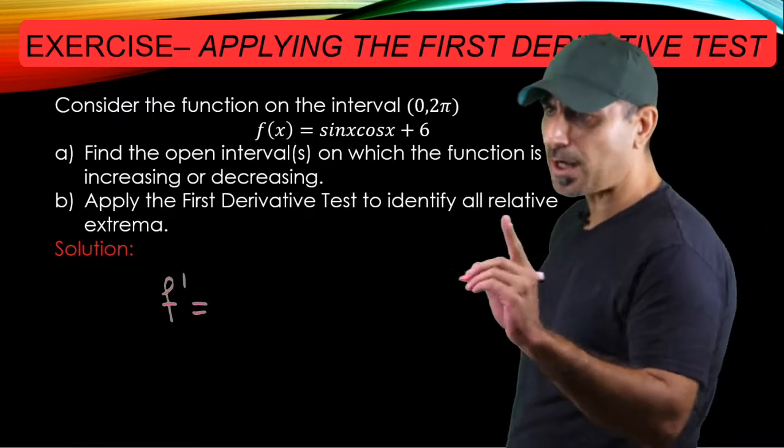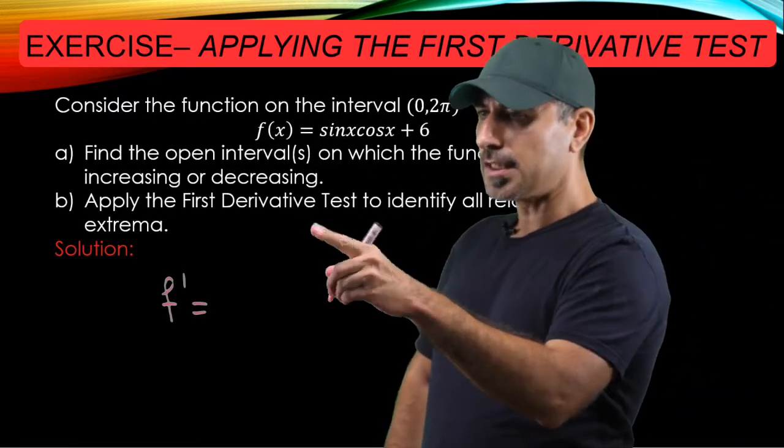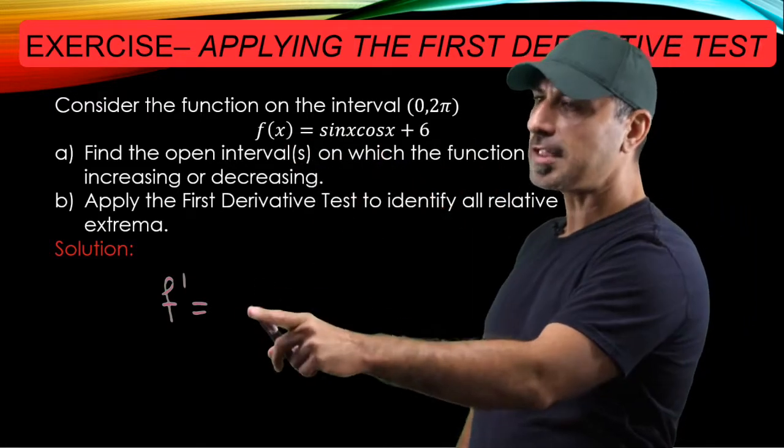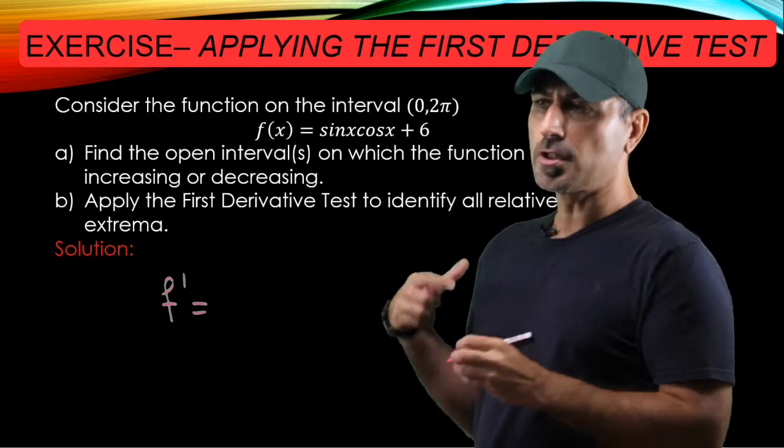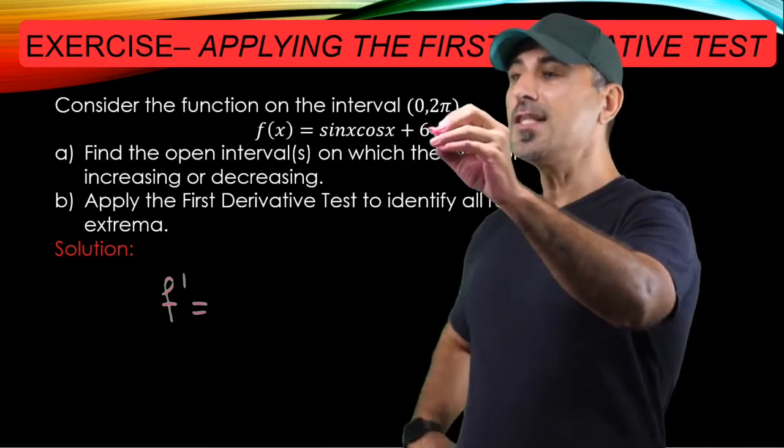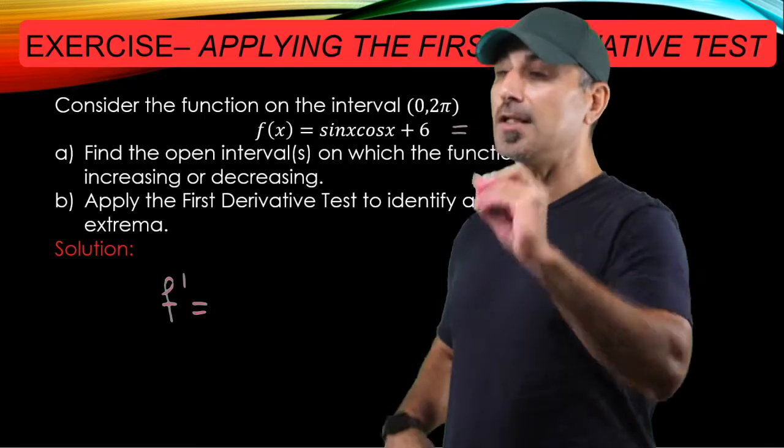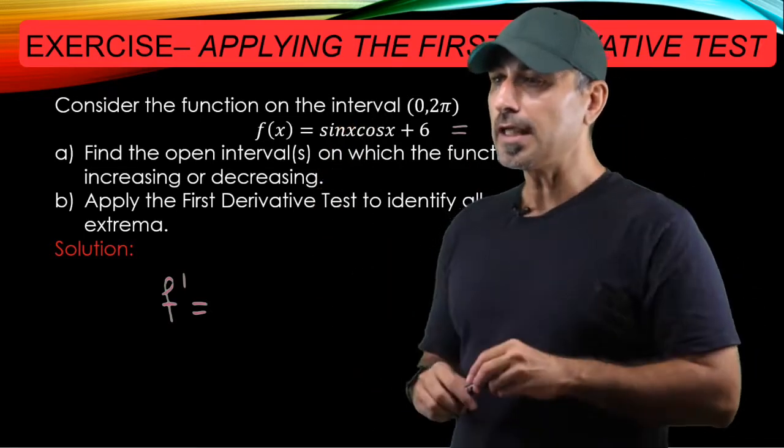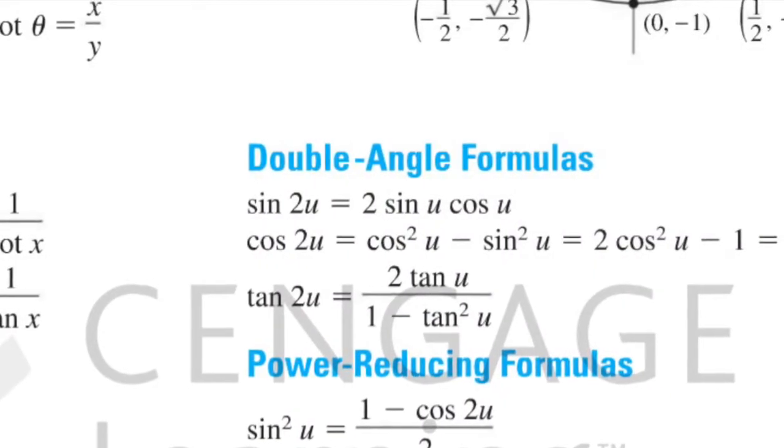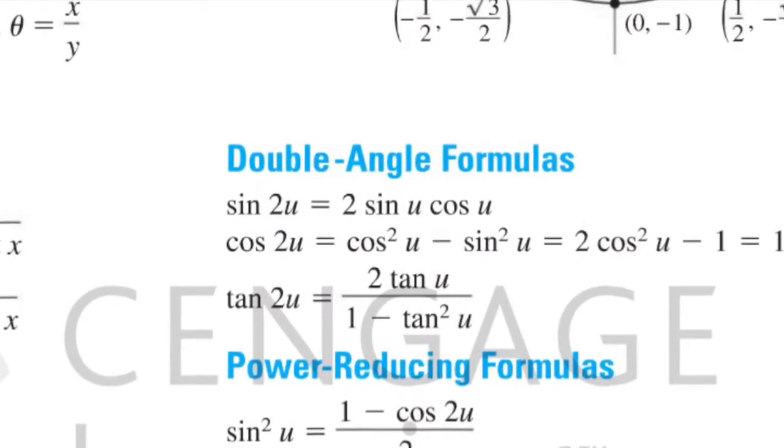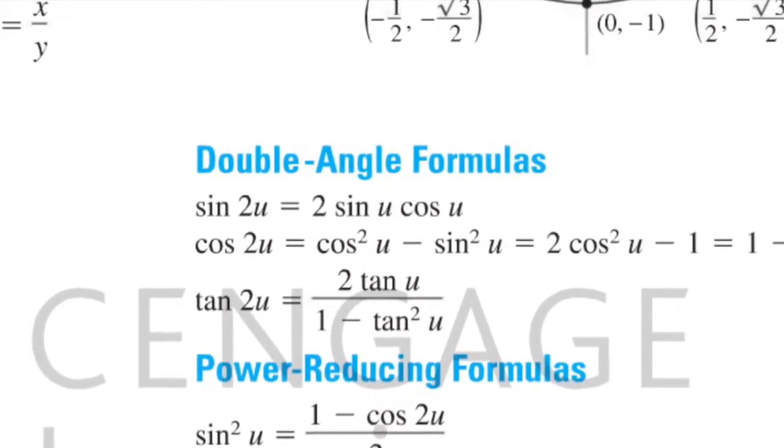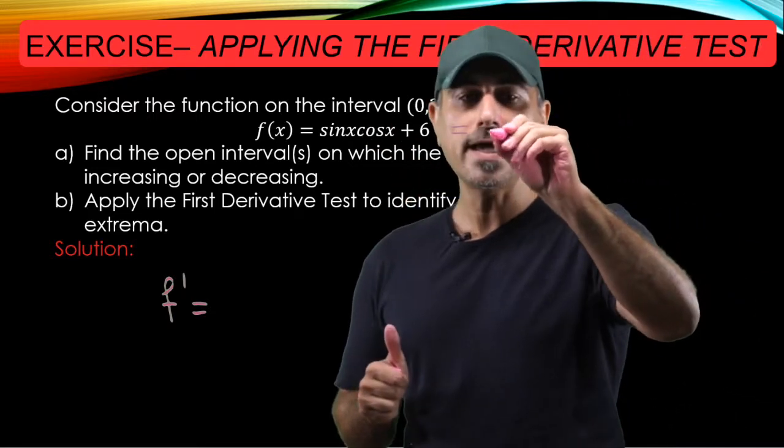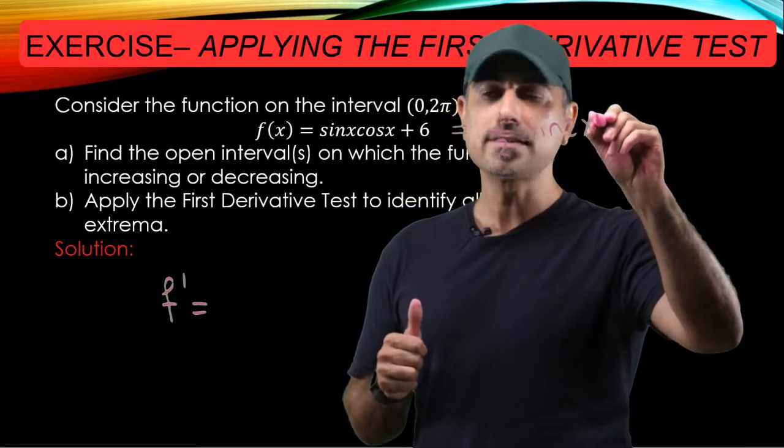I want to remind you one nice property here that's going to ease our job along the way. So we have sine x multiplied by cosine x. Normally when we take the derivative here, we can just use the product rule. But we have a really nice identity that's in your trigonometry formula card, which is called the double angle identity. So sine x times cosine x is in fact one half times sine 2x.